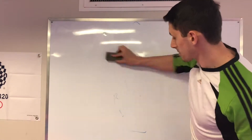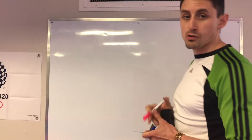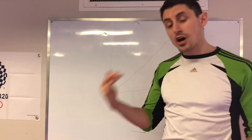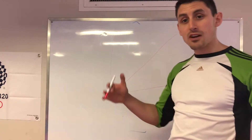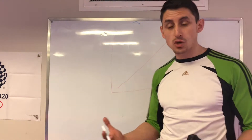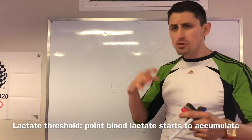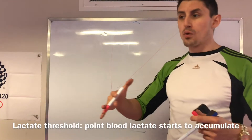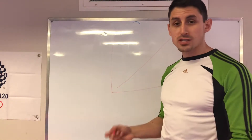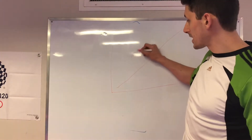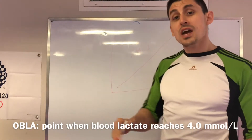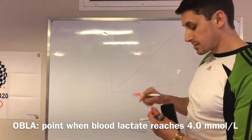As we exercise and intensity goes up, here's a graph showing intensity increasing over time. There are a lot of different terms in the research around this point — we'll hear things called the ventilatory threshold, the anaerobic threshold, the lactate threshold. These are all different names for the transition from an aerobic to an anaerobic state. But one that really stands true and that we can measure is called the onset of blood lactate accumulation, or OBLA.